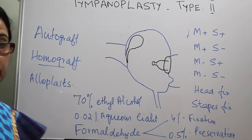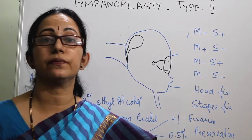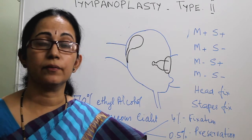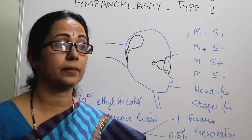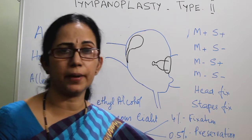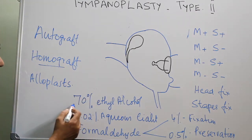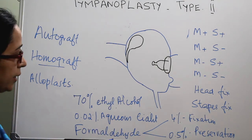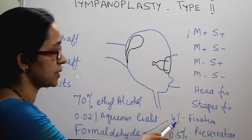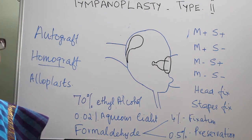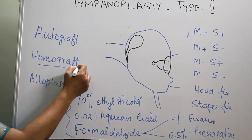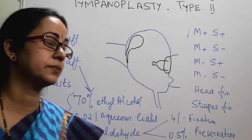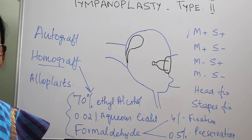Homografts are not at all preferred nowadays because of the chance of infection, especially HIV and slow virus infection. If used, the materials come mainly from a living patient or from a cadaver. Some institutions have an ossicle bank, and these ossicles are preserved in 70% alcohol, 0.02% aqueous cyanide solution, or formaldehyde — 4% for fixation and 0.5% for preservation. This is usually asked in viva.